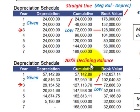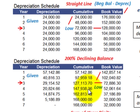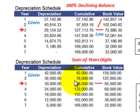Looking at the 200% declining balance, the accumulated depreciation at year three was well above $72,000. And for sum of years digits, accumulated depreciation was $108,000 — also well above the $72,000 for straight line. So straight line clearly produces the highest book value at the end of year three.